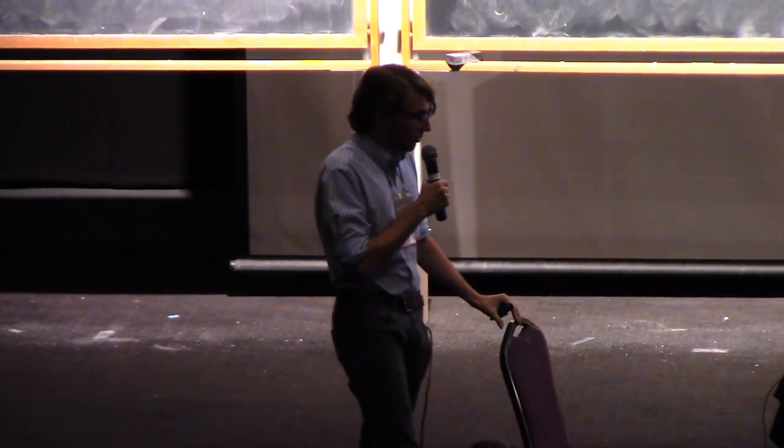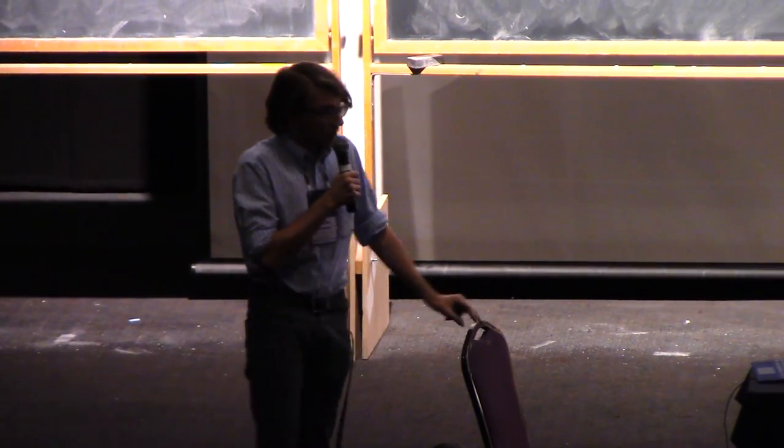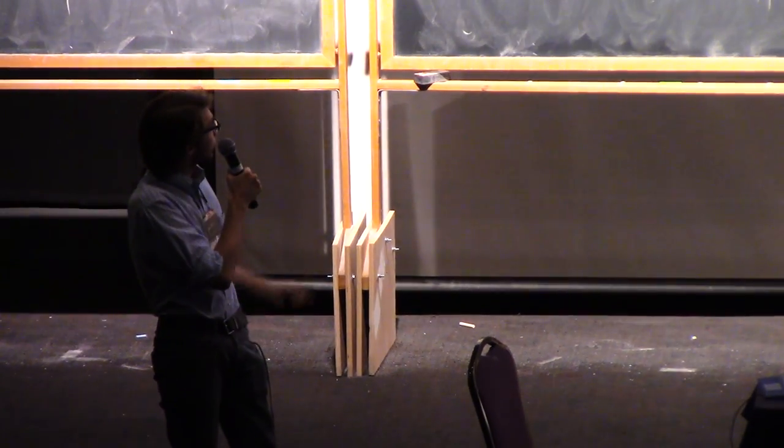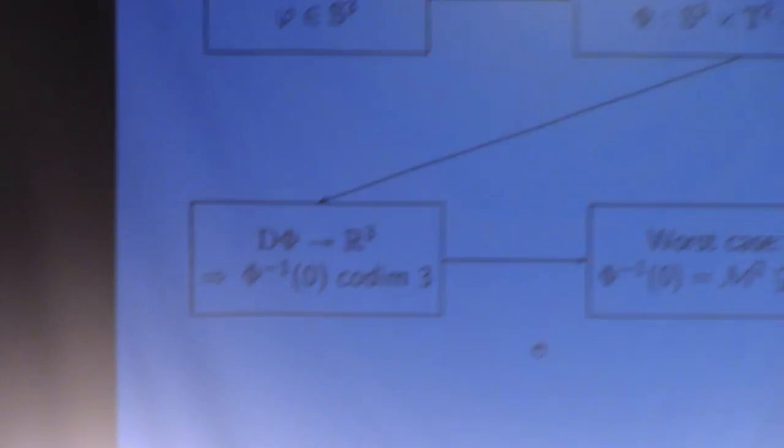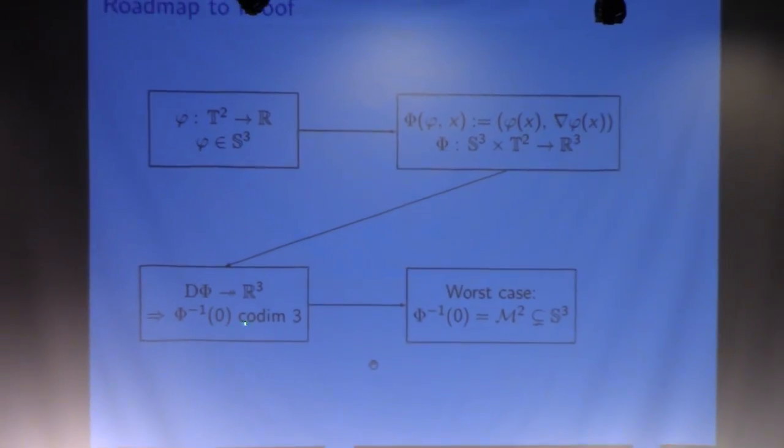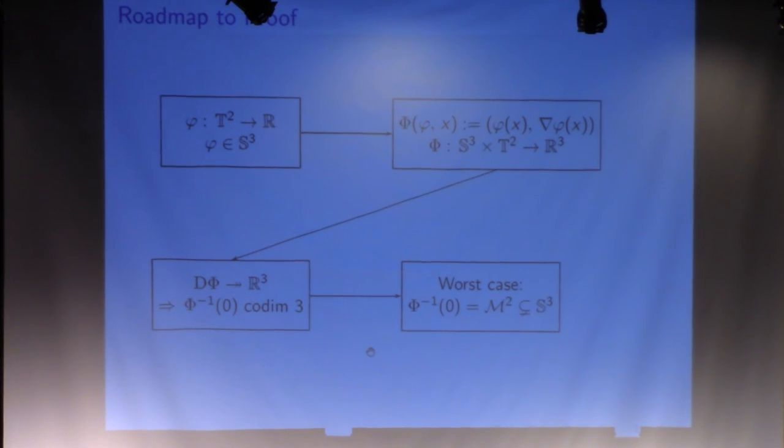What does that give us? It's actually a pretty nice result of differential topology, that since the differential is surjective everywhere, we know that the pre-image of zero under our function is something co-dimension three living in S^3 cross T^2. You can also think of that as basically a two-dimensional surface.